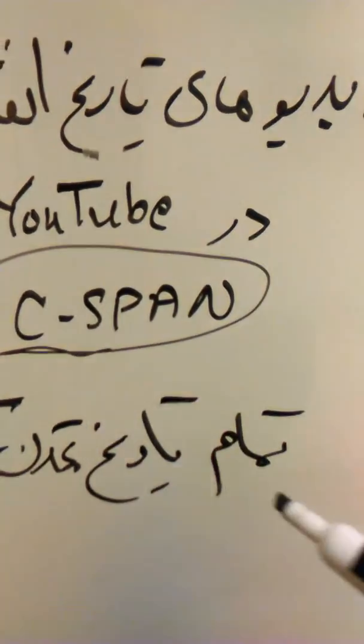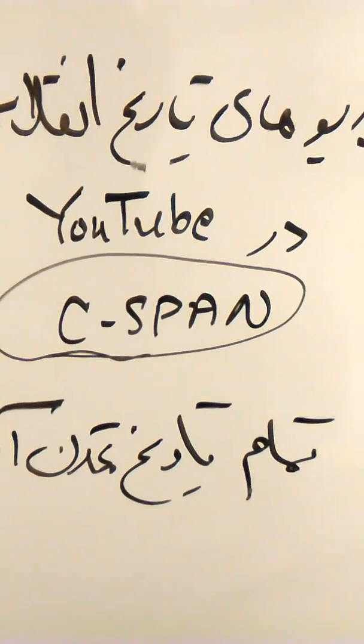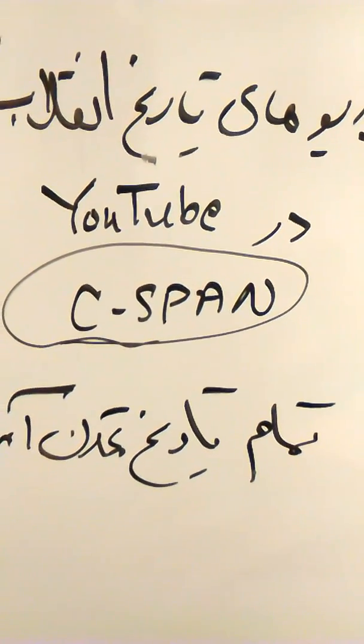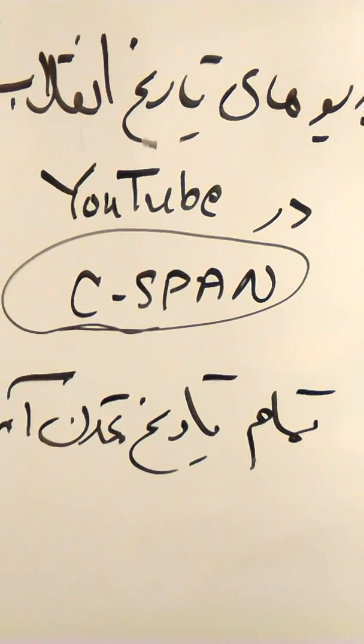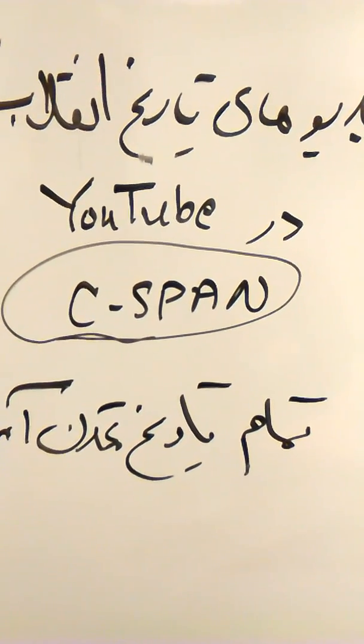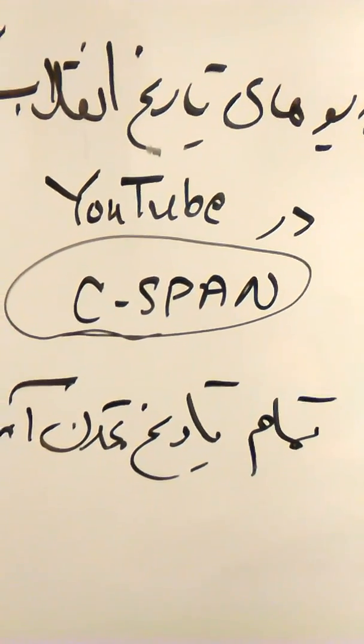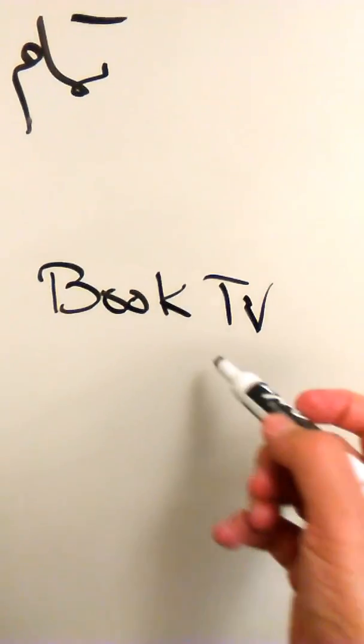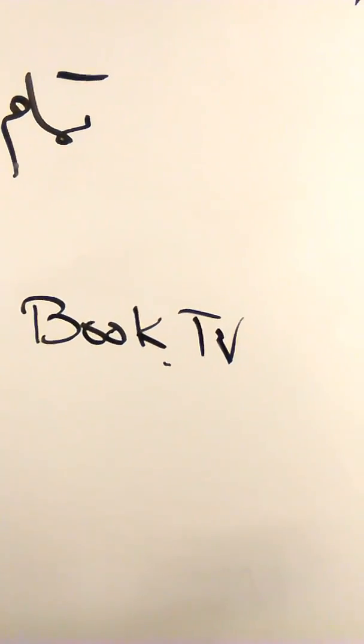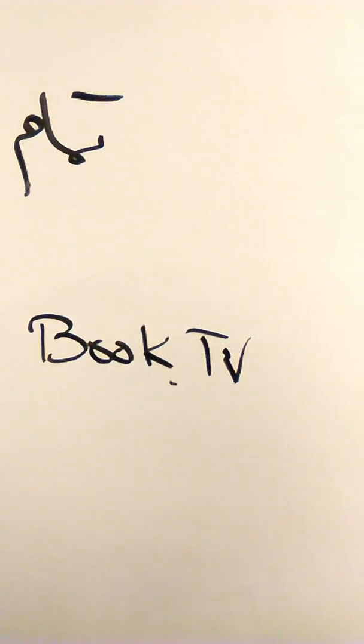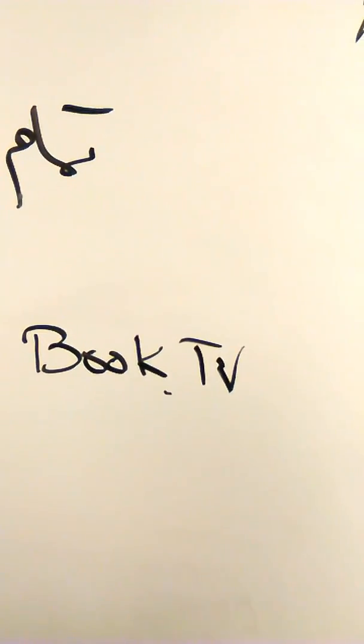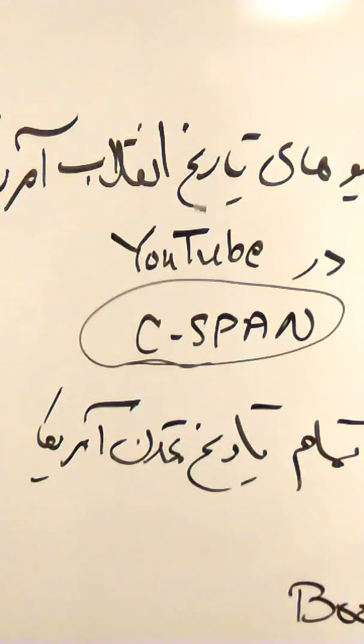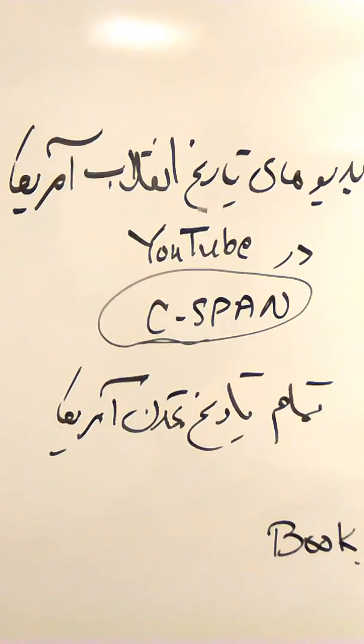بعد این کانال C-SPAN رو بهتون گفتم، خوبیش اینه که فقط راجب چیزهای سیاسی صحبت نمیکنه، تاریخ سیاست، تاریخ شهرهای مختلف رو میگه. و نویسنده‌های مختلف میان توی اون Book TV. این Book TV نویسنده‌های مختلف میاره، کسایی که رومان نوشتن، کسایی که کارهای تاریخی کردن، چیزهای مختلف، خیلی محشره.